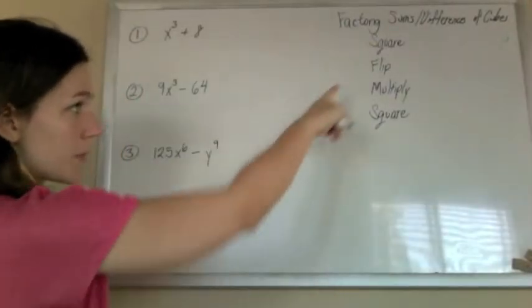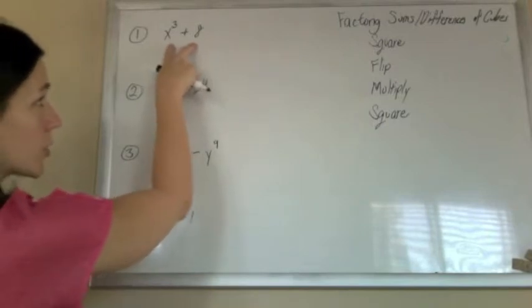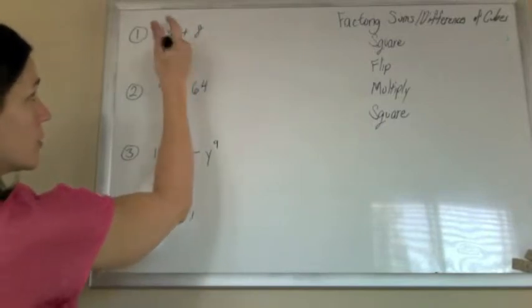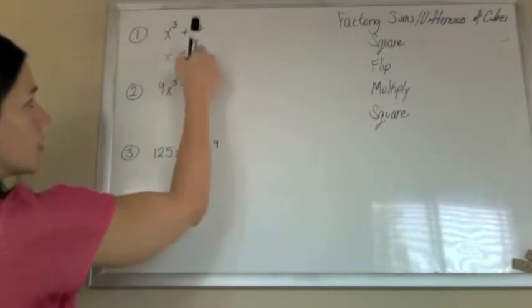Okay, so we're going to be factoring sums and differences of cubes, just lots of examples. So we see we have two terms, they're both perfect cubes. x cubed is x cubed, 2 cubed is 8.